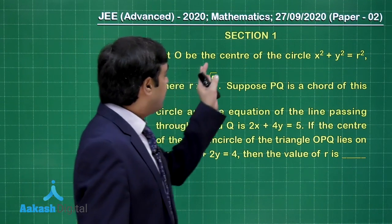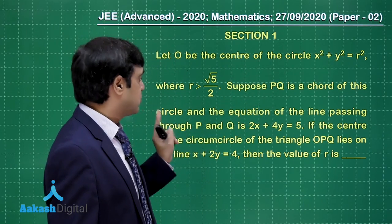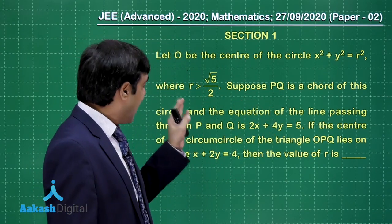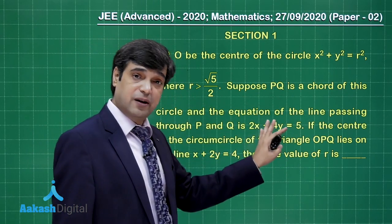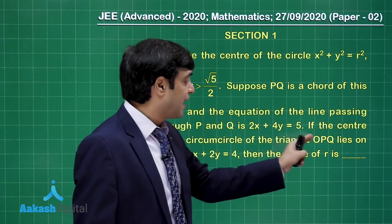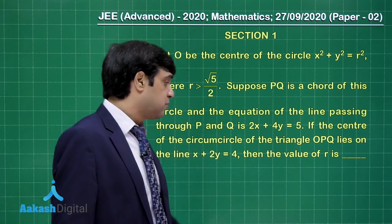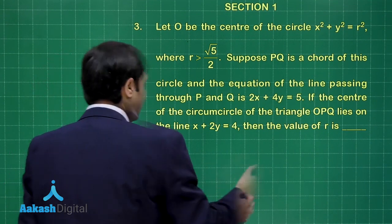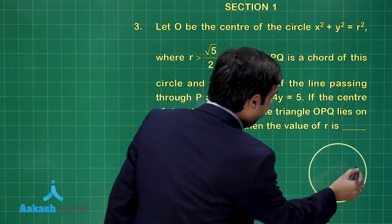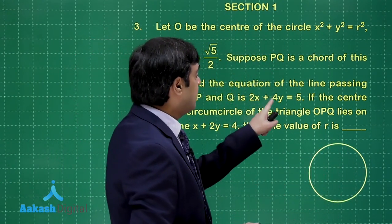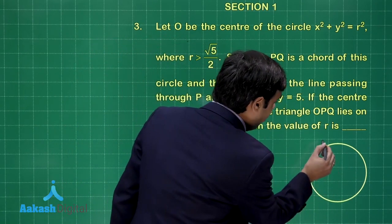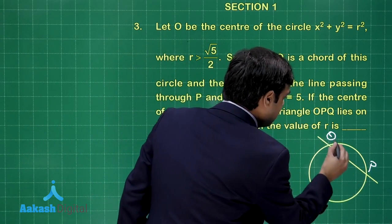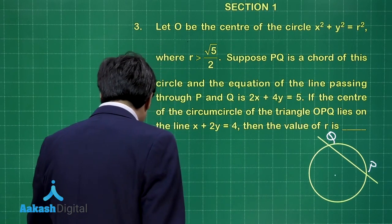Question 3: Let O be the center of the circle x² + y² = r², where r > √(5/2). Suppose PQ is a chord of this circle and the equation of the line through P and Q is 2x + 4y = 5. If the center of the circumcircle of triangle OPQ lies on the line x + 2y = 4, find the value of r.